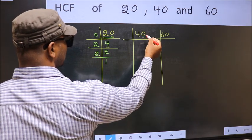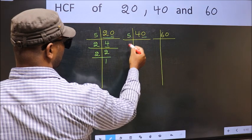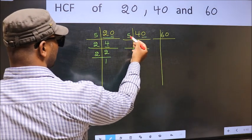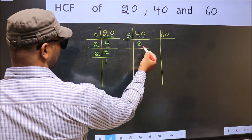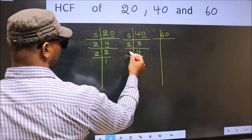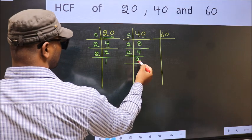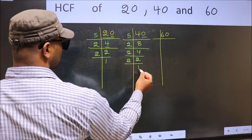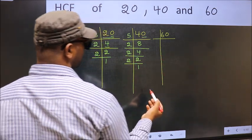Now the other number. Last digit 0, so take 5. When do we get 40 in 5 table? 5, 8 is 40. Now 8 is 2, 4 is 8. 4 is 2, 2 is 4. Now 2 is a prime number, so 2, 1 is 2. Now the other number.